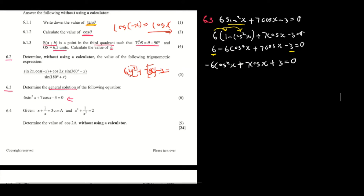Then you're going to divide throughout by negative 1, and you will have 6 cos² x minus 7 cos x minus 3 equals 0.